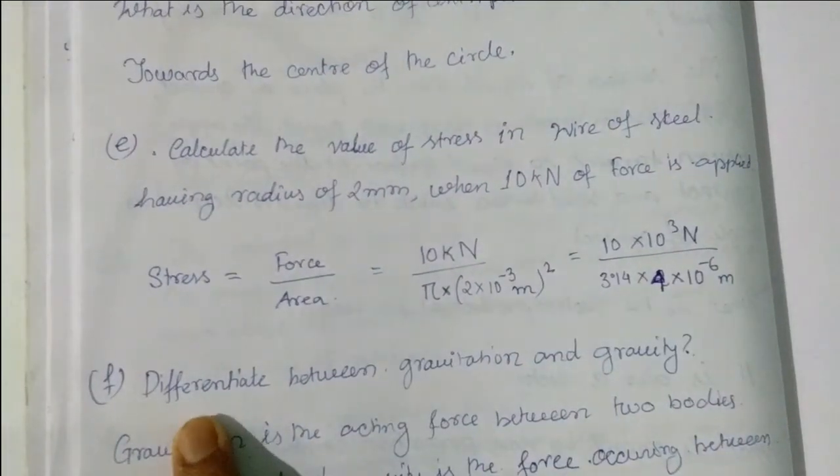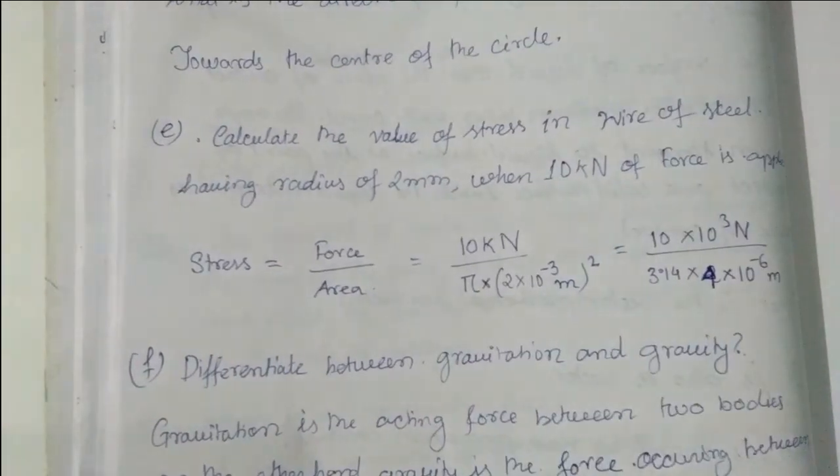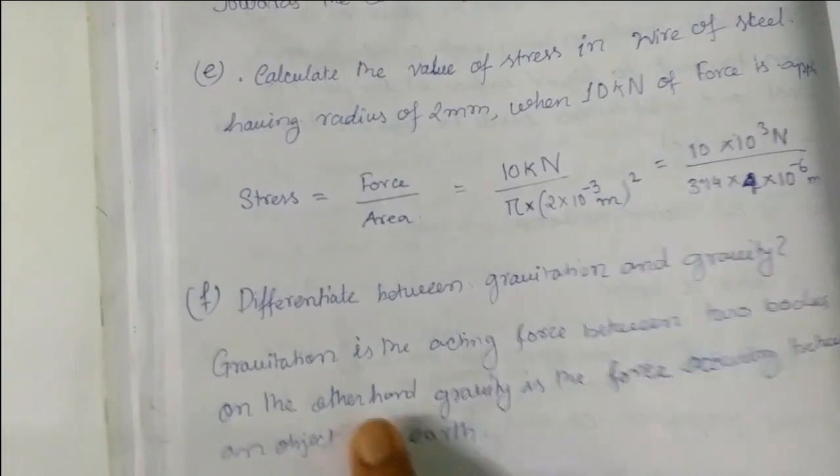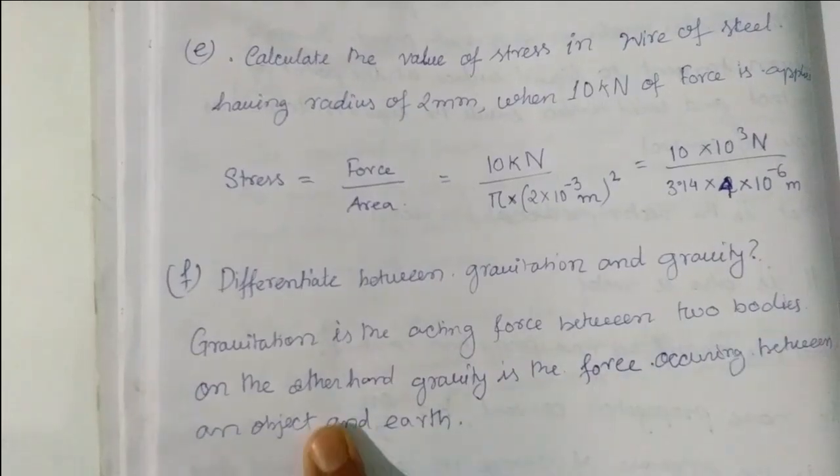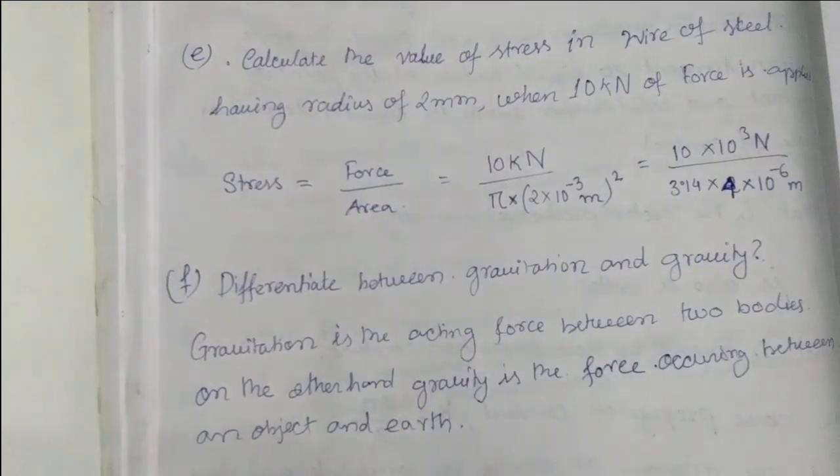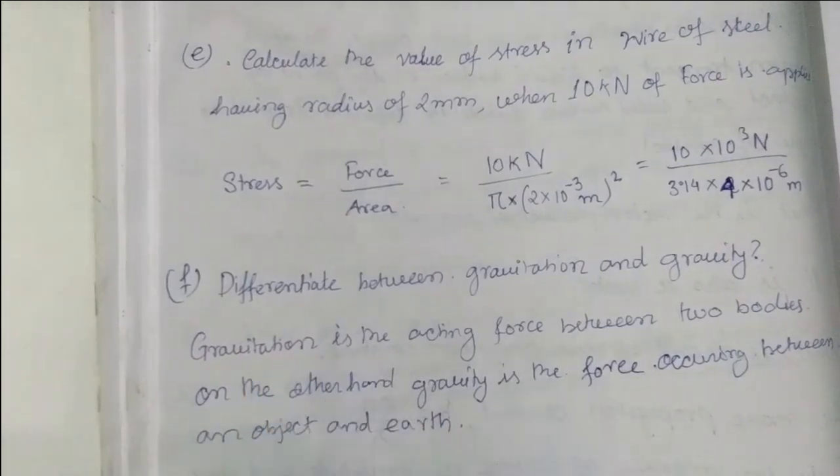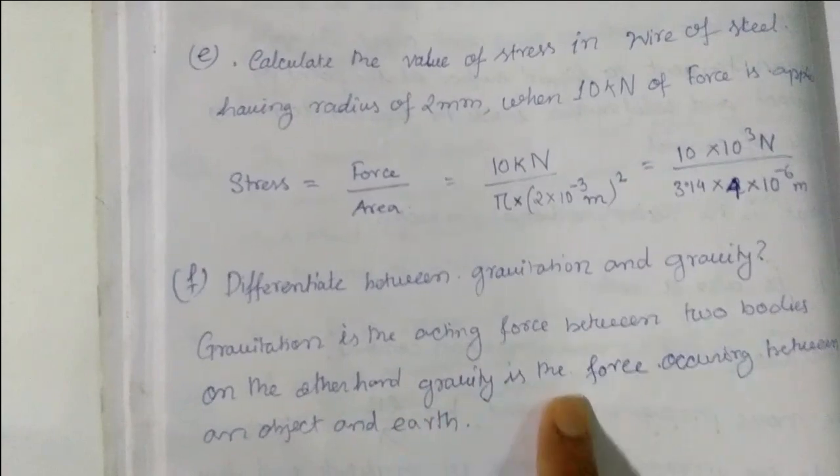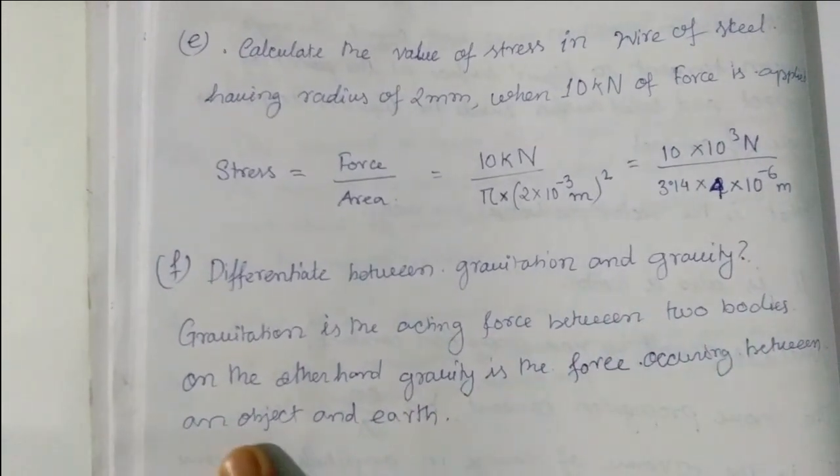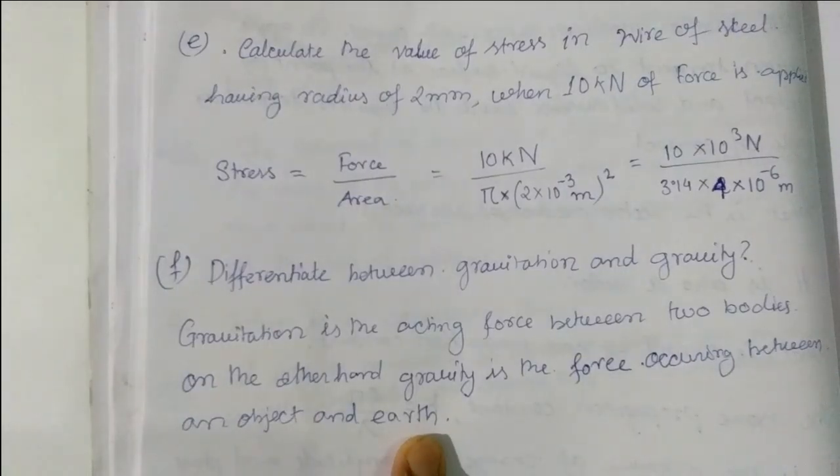Next question: Differentiate between gravitation and gravity. Gravitation is the acting force between two bodies due to their mass. It is known as gravitation, while gravity is the force occurring between two bodies, that is the object and the earth. This is gravity.